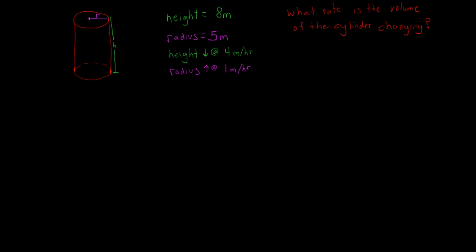In this problem we're given a cylinder that has height 8 meters, radius 5 meters. We know that the height is decreasing at a rate of 4 meters per hour, and the radius is increasing at a rate of 1 meter per hour. The question is asking us: what is the rate of change of the volume of the cylinder?